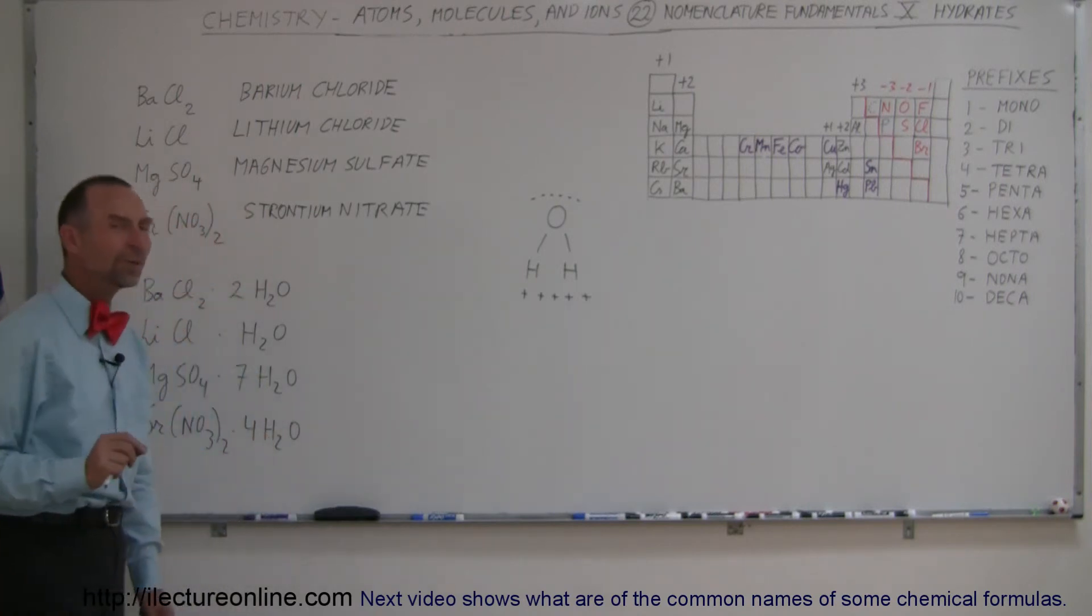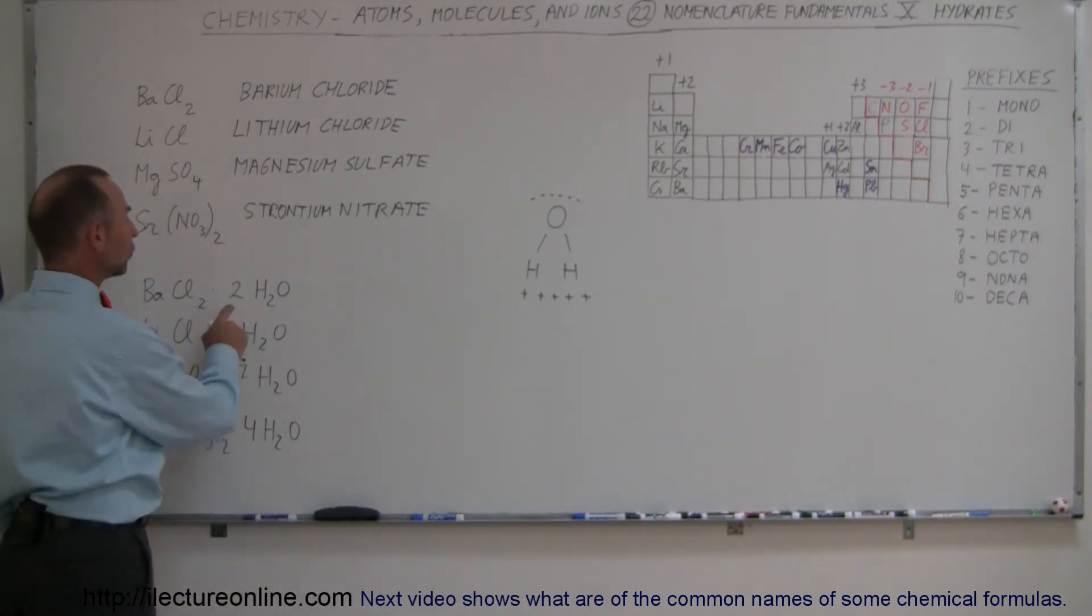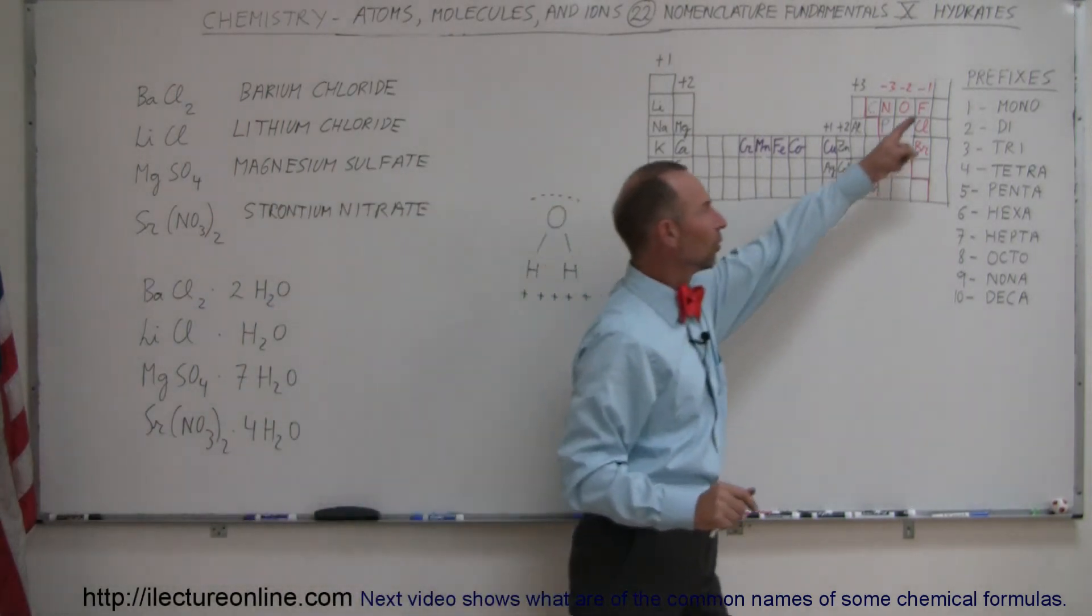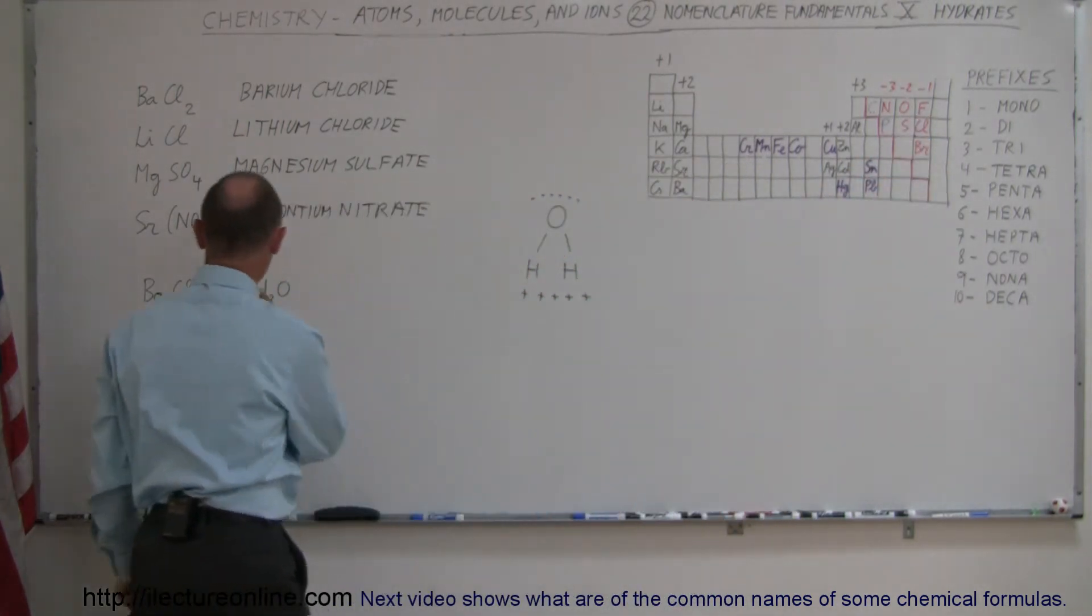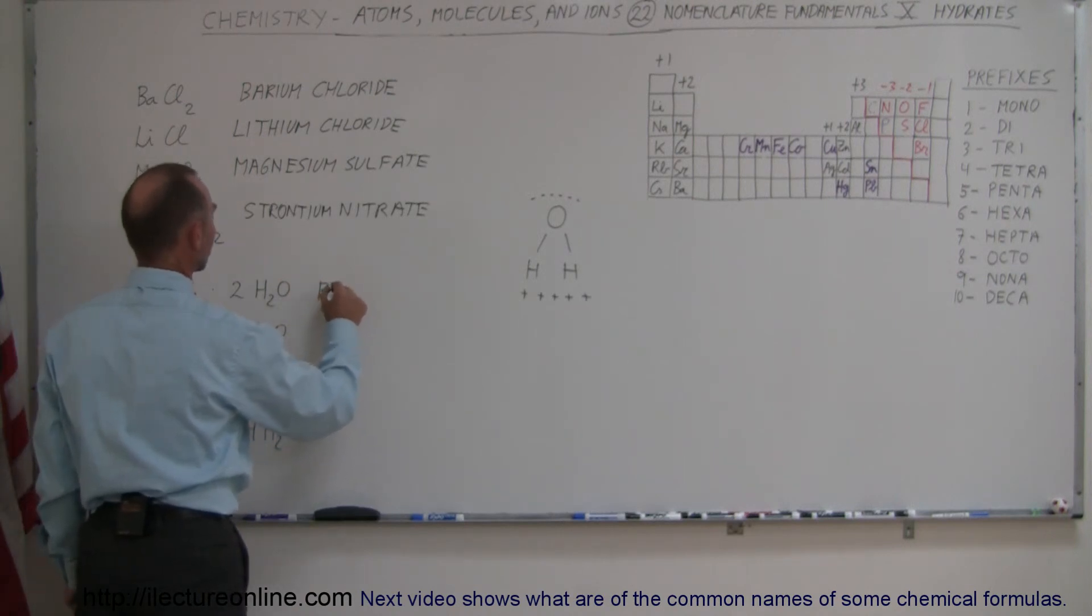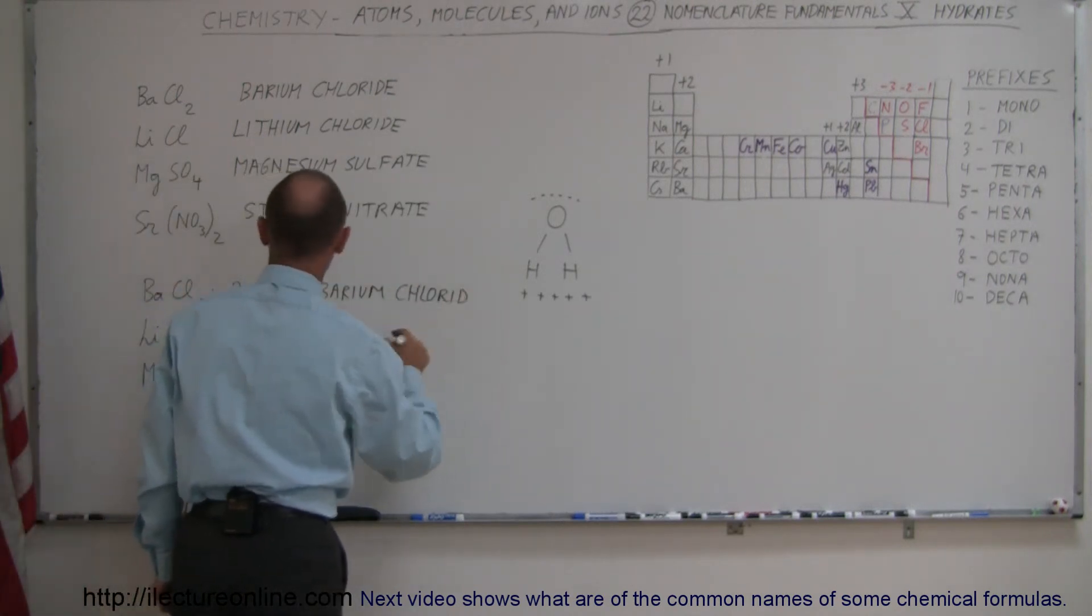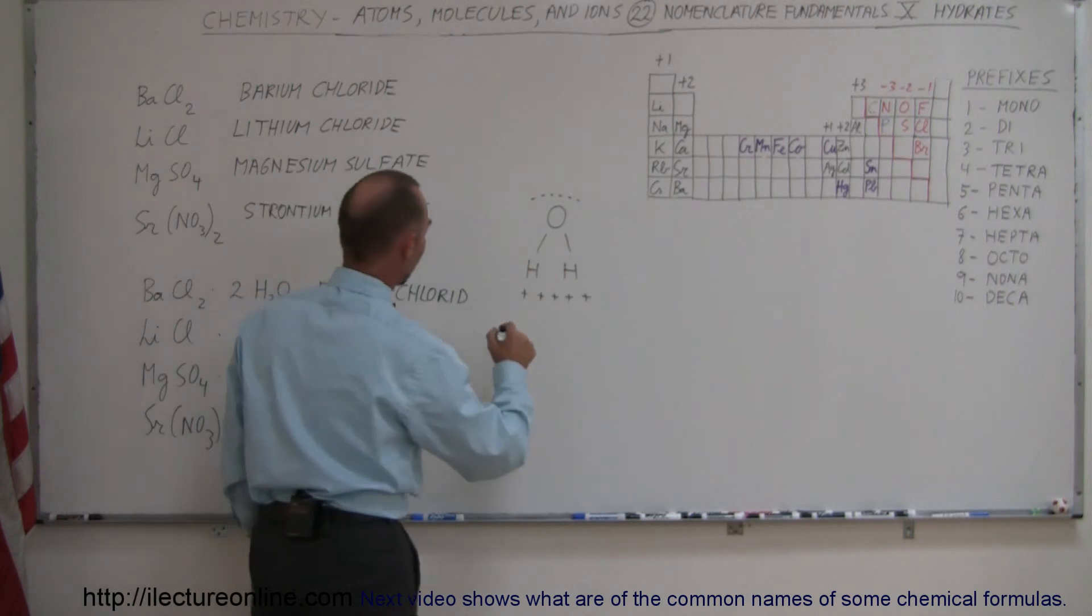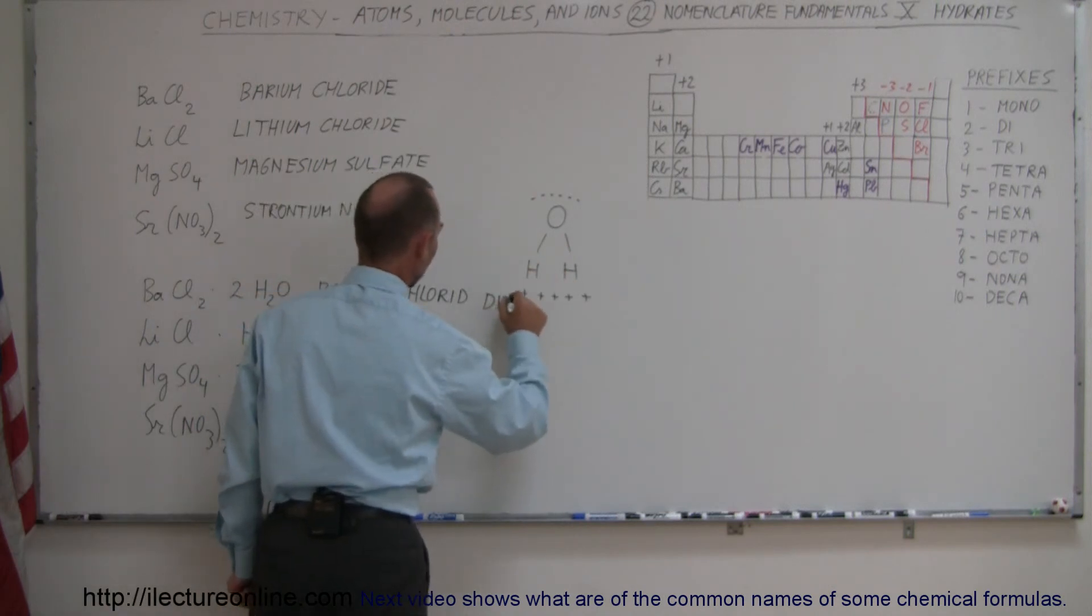Well, again, we're going to use these prefixes to indicate the number of water molecules that we have. So in this case, this would be called barium chloride. And since there's two of them, we call that dihydrate.